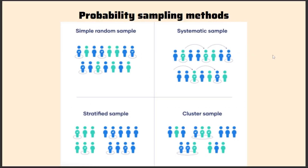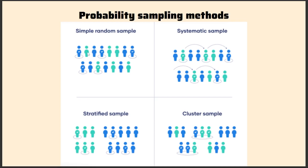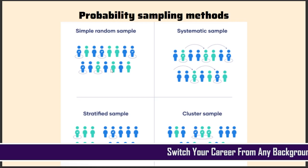Now we have two types of sampling methods: probability-based and non-probability-based. In probability-based sampling, there are four commonly used methods. First is simple random sampling — you pick up the samples randomly from the entire population, typically done by creating random numbers and then picking up the samples according to them. Then you have systematic sampling, where a certain pattern is followed — for example, after every two samples another sample is picked up.